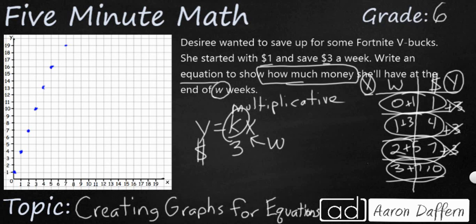Now, the only change that we need to make here is that she started with a dollar. So we're just going to add one to whatever our product is here. So let's see if this works. Y equals 3w plus one.